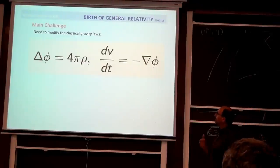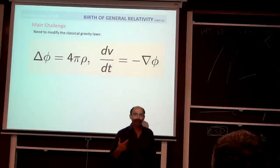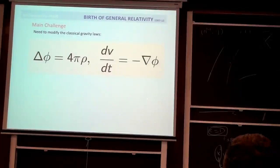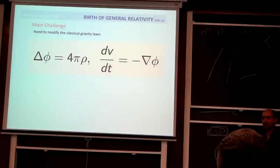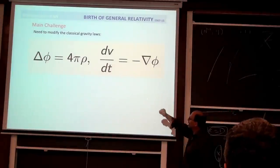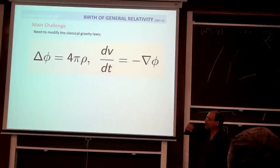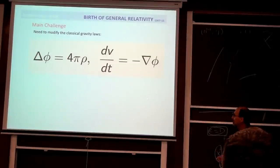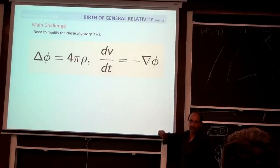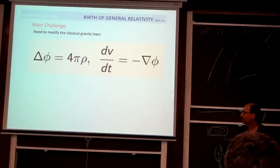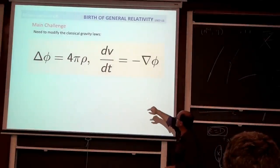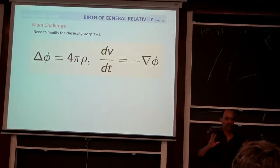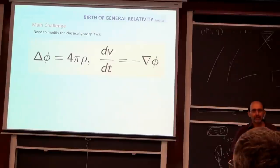After special relativity, the obvious issue that Einstein and many others had was to try to put classical gravity in the framework of relativity. It is very difficult. Classical gravity is expressed in terms of a potential φ, which satisfies the Poisson equation Δφ = 4πρ, and a particle moves in the field given by the mass according to dV/dt equals the gradient of φ. This is completely inconsistent with special relativity.